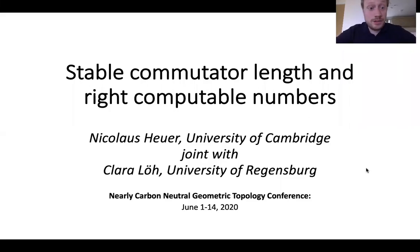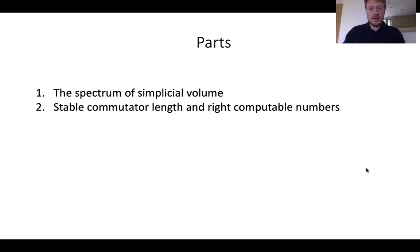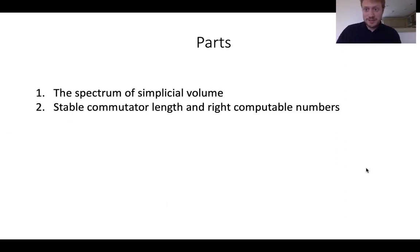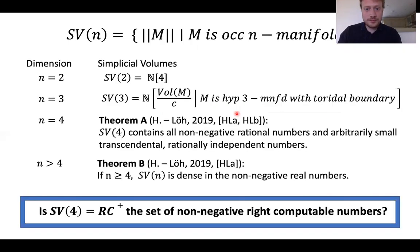This is the second part of my talk where I discuss stable commutator length and right-computable numbers. Just to remind you, there was a first part where I defined simplicial volume and stated the results — in particular that every rational number can be realized as the simplicial volume of a four-manifold.